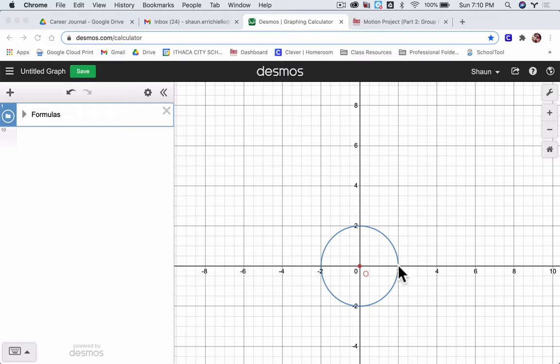So I have my static point. I have my circle with the radius of 2. I now need to create an angle.